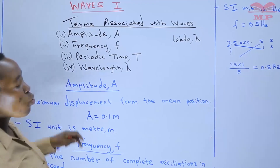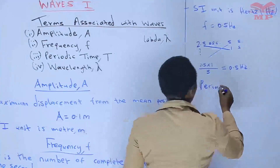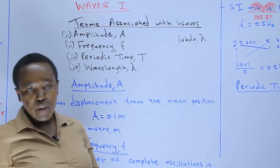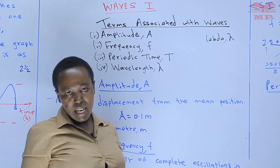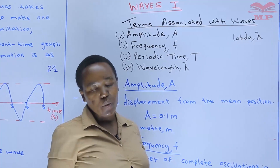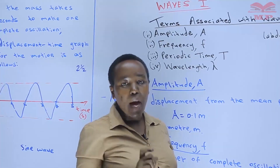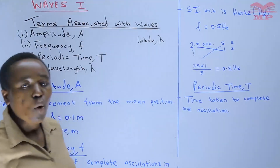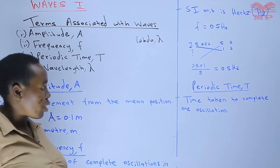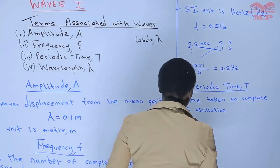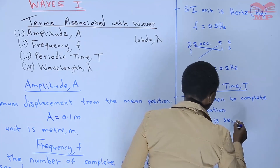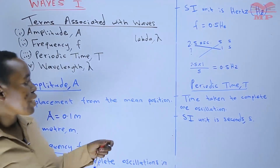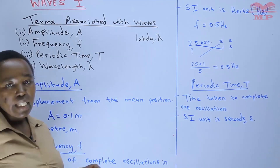Let's move on and look at periodic time. When we talk of periodic time, it is the time taken to complete one oscillation. Being a measure of time, the SI unit for periodic time is seconds.